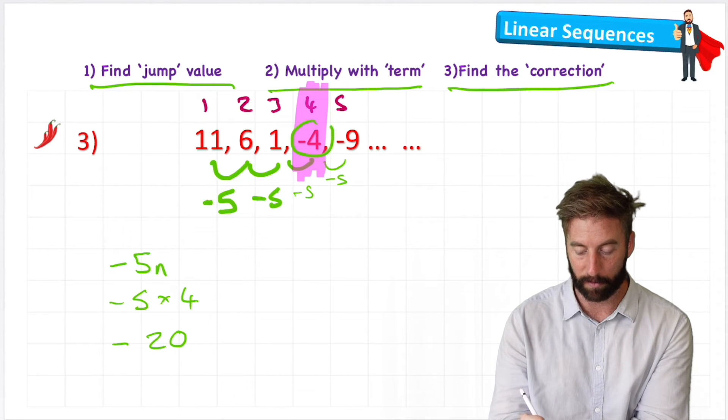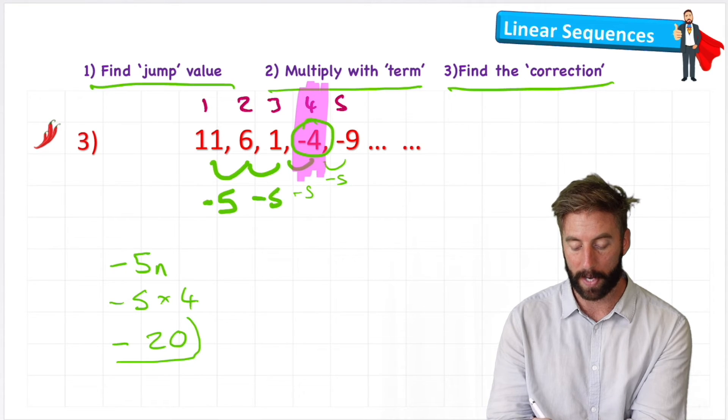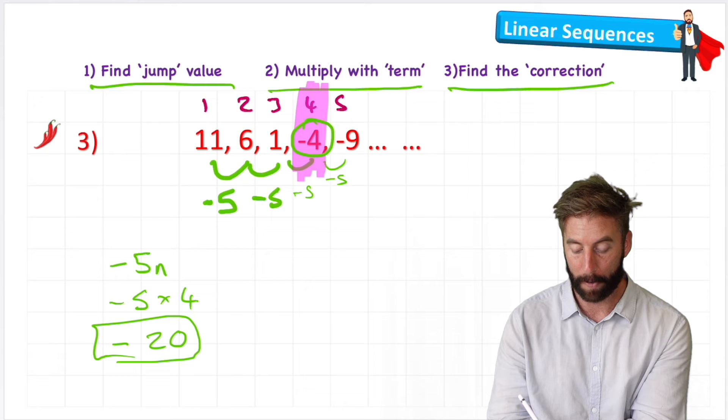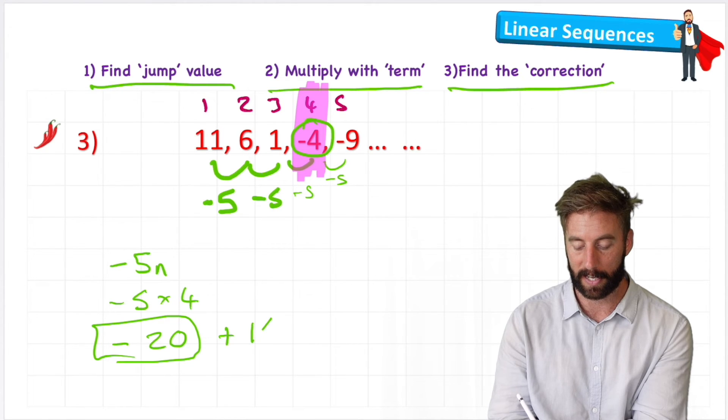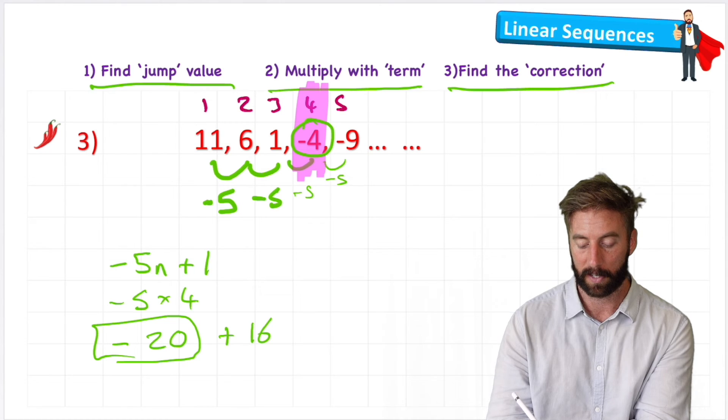So we're close to our negative 4 target, but not quite. So how can we get from negative 20 to negative 4? Well, we would need to plus 16. So my formula would be negative 5n plus 16.